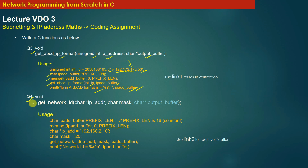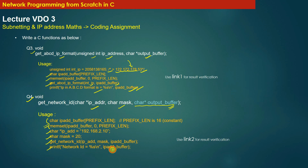In question four, you have to write a function to get the network ID. The input to the function is the IP address and the mask value, and the result is returned in an output buffer. Take an empty buffer, pass the input IP address and mask value, call the function, and print the network ID returned in the output buffer. You can use link 2 to verify your result.